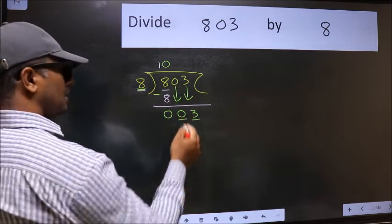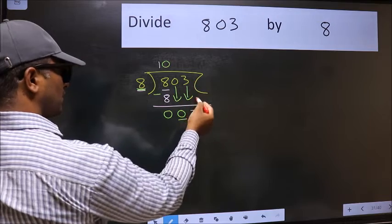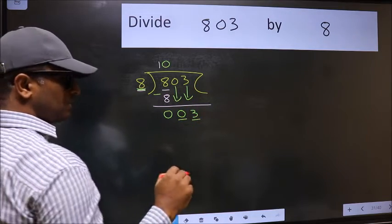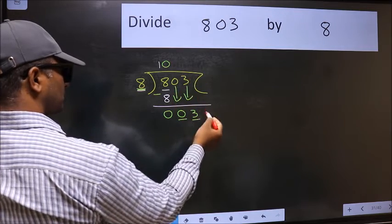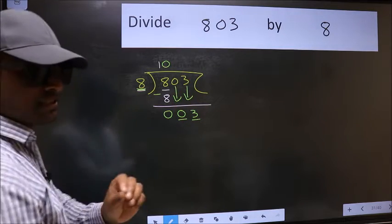And we don't have any more numbers to bring it down. So what many do is they directly put dot, take 0. Which is wrong.